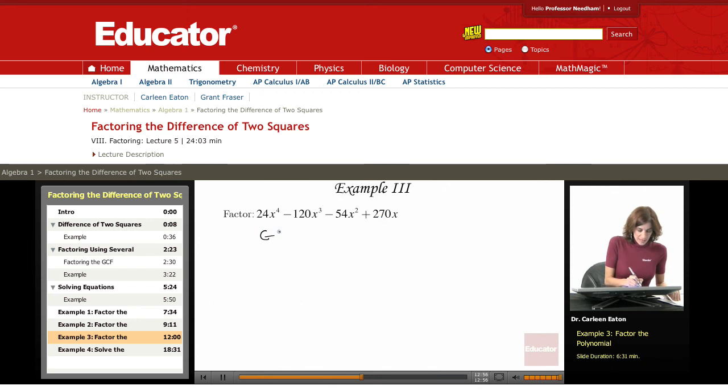So, for my greatest common factor, for the numbers, 6 is the greatest common factor. For the variable, the smallest exponent I have for any of the x's is 1. So, there's really a 1 there, but we don't write it out. So, x.